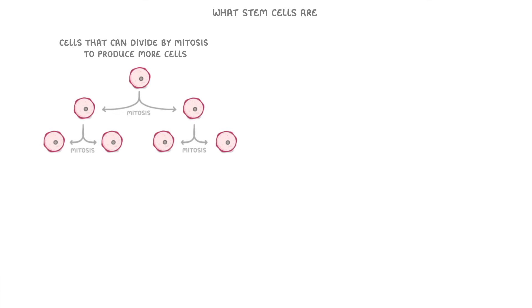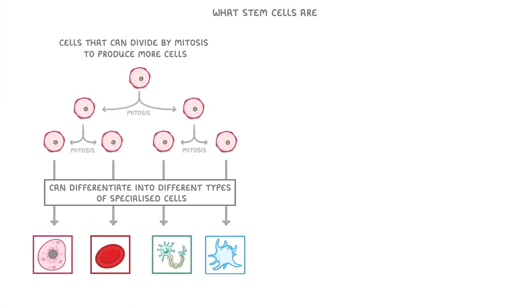Before we start, I want to quickly recap what stem cells are. There are really two important features about them that you need to remember: one, they can divide by mitosis to produce more cells, and two, they can differentiate into different types of specialized cells.